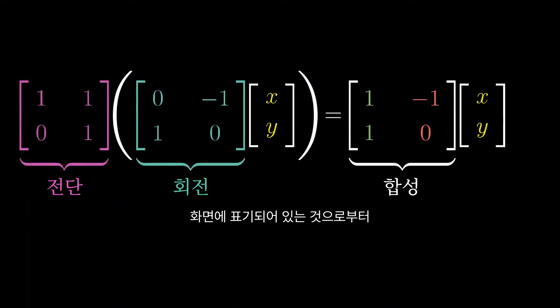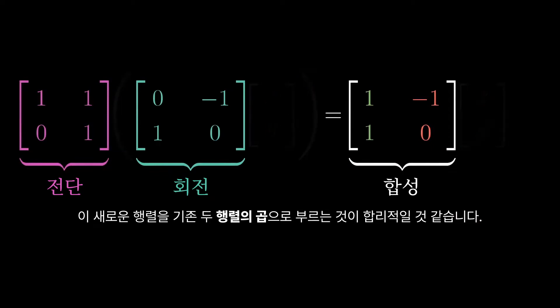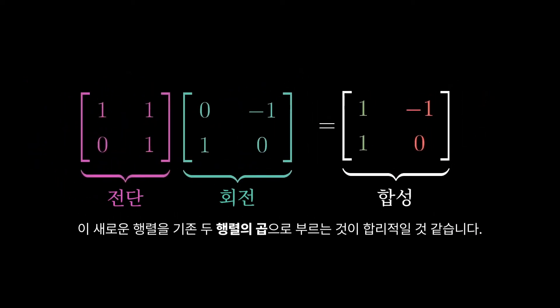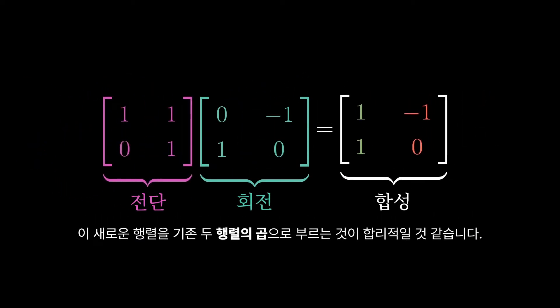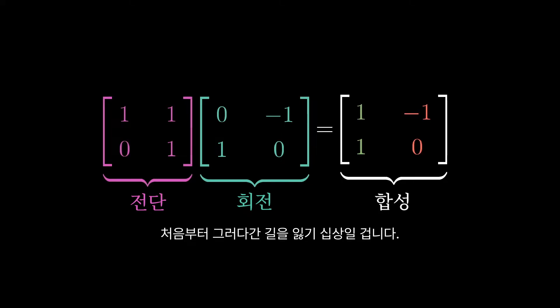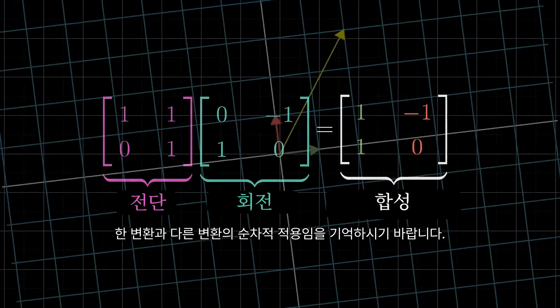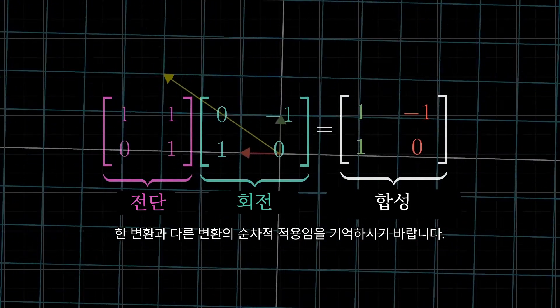Based on how things are written down here, it's reasonable to call this new matrix the product of the original two matrices. We can think about how to compute that product more generally in just a moment, but it's way too easy to get lost in the forest of numbers. Always remember that multiplying two matrices like this has the geometric meaning of applying one transformation, then another.